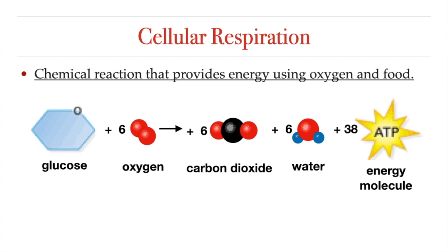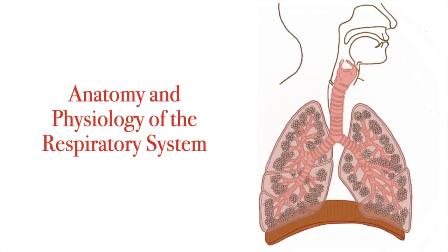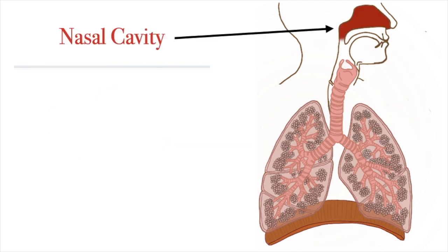So ultimately, we need to breathe for the same reason that we need to eat: to provide our cells with energy. Now that we understand the purpose of the respiratory system, let's explore the anatomy and physiology of the different organs that make up this system. And let's start at the place where air enters our body, the nasal cavity.